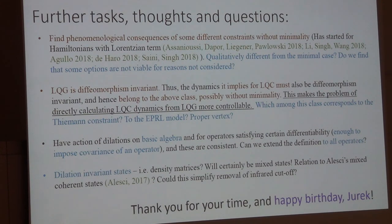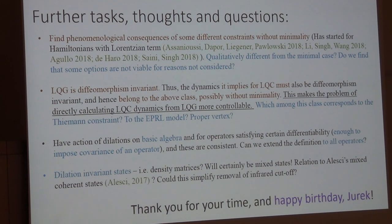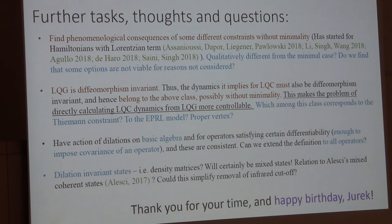We have two ways of imposing dilations — one on the basic algebra and another on operators which are covariant — and these two definitions are consistent with each other for an appropriate choice of ordering for mixed algebra terms. But is there some definition of dilations which would act on all operators? I don't know the answer to that, but it would be nice. Another interesting idea is, instead of imposing covariance on an operator such as the Hamiltonian constraint, you could consider imposing invariance of a density matrix — considering dilation-invariant states in loop quantum cosmology. It at least opens up that as a possibility. That's all I have for my talk, and happy birthday, Jurek.